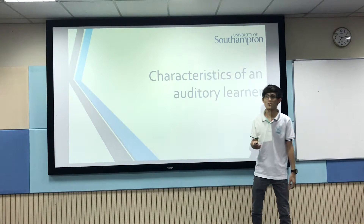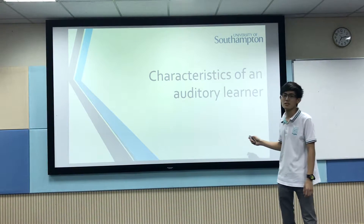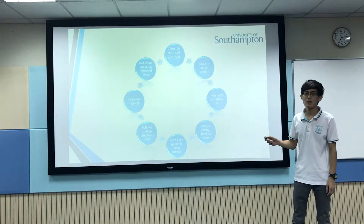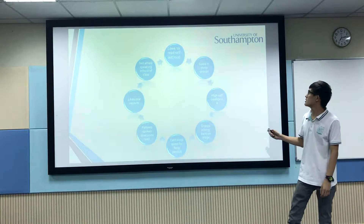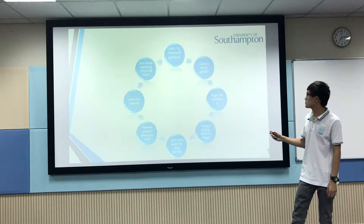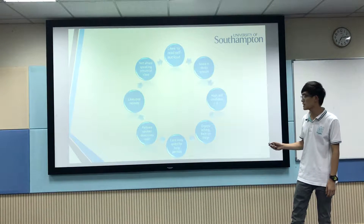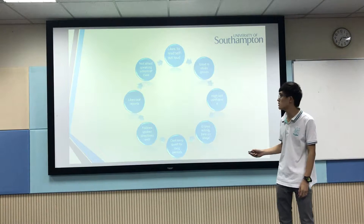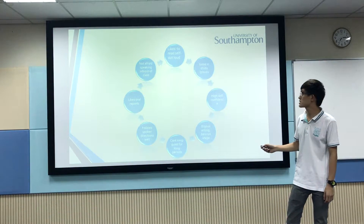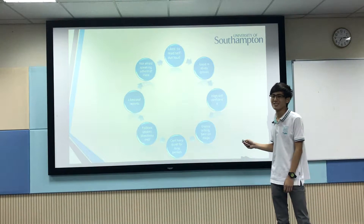Hi, I'm Kok Sia. I will explain the characteristics of an auditory learner. An auditory learner likes to read aloud. They are good in study groups, have high self-confidence, enjoy being on stage, cannot keep quiet for long periods, follow spoken directions well, like oral reports, and are not afraid of speaking in front of class.